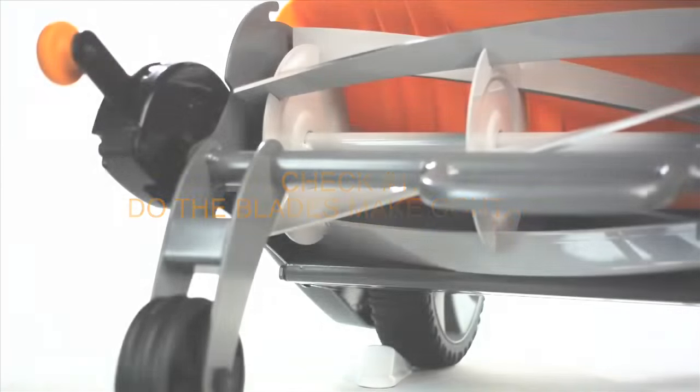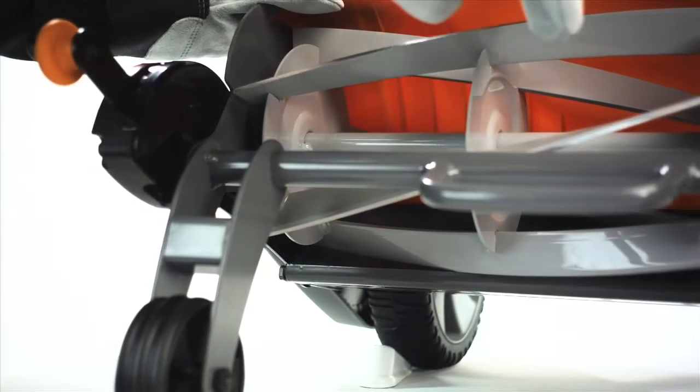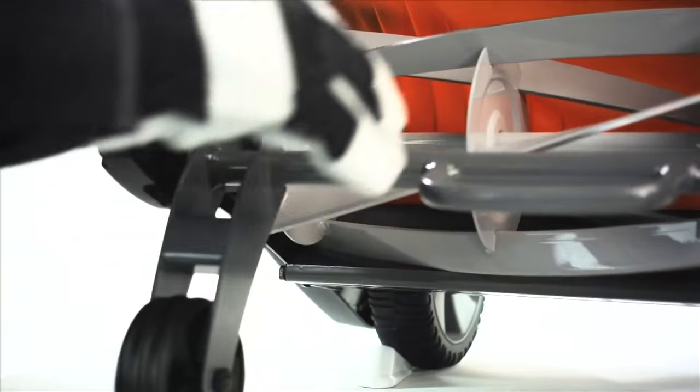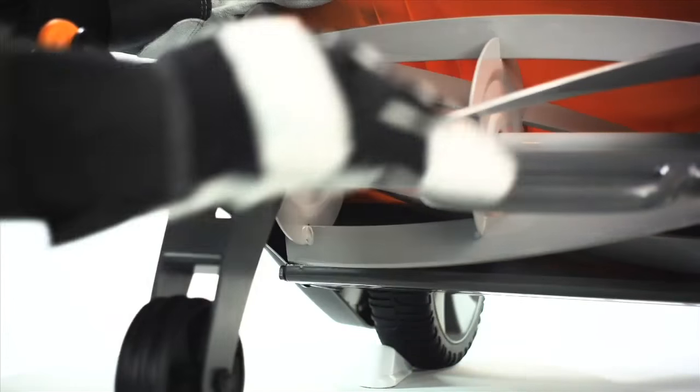To check the cutting system, spin the reel slowly. If you hear scraping or feel resistance, the cutting reel blades are touching the stationary blade and need to be adjusted.